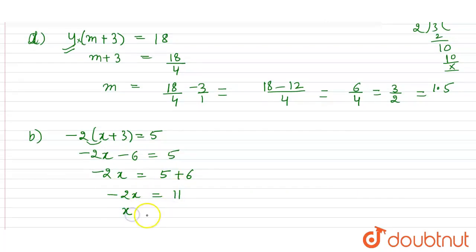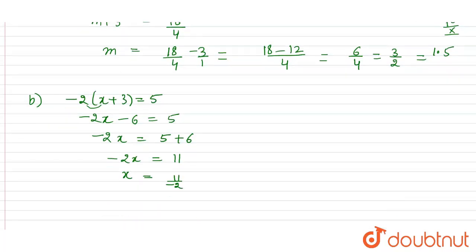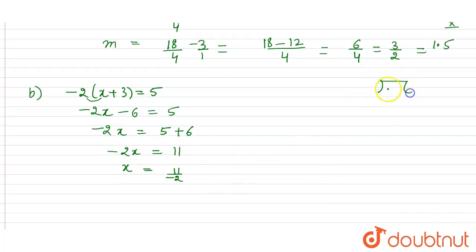So minus 2x will be equal to 5 plus 6 which is equal to 11. So the value of x will be equal to 11 divided by minus 2. 11 divided by minus 2.